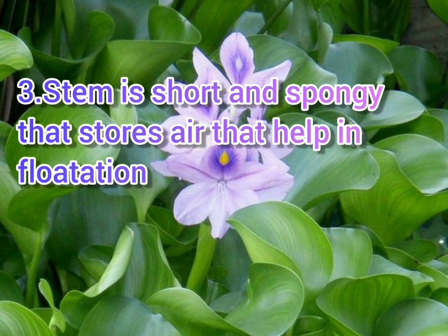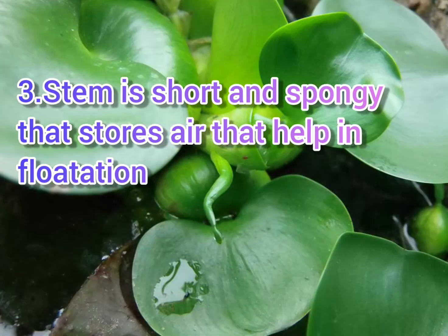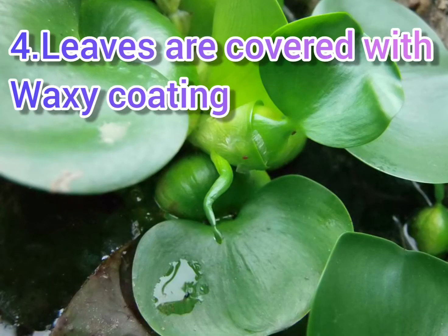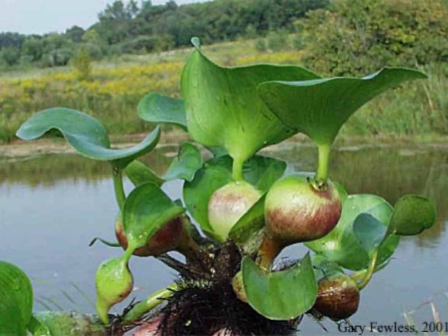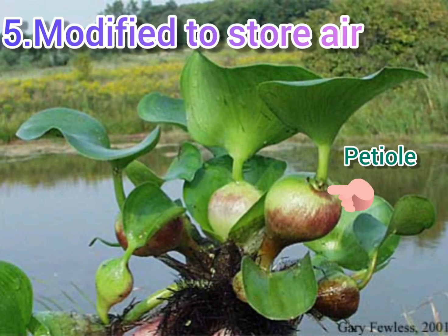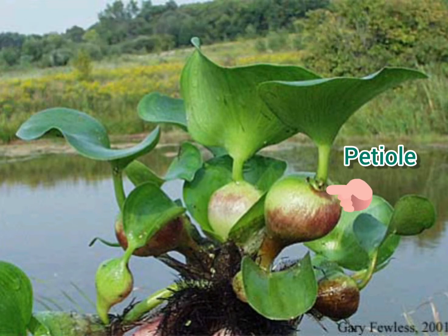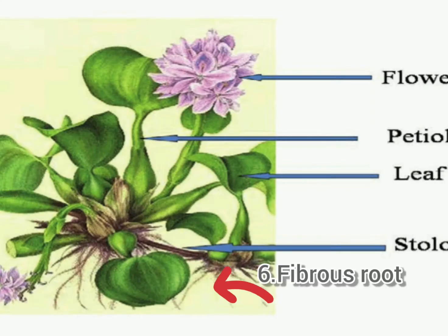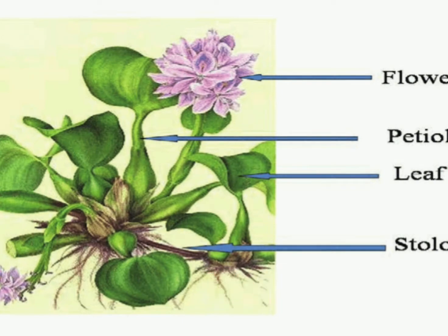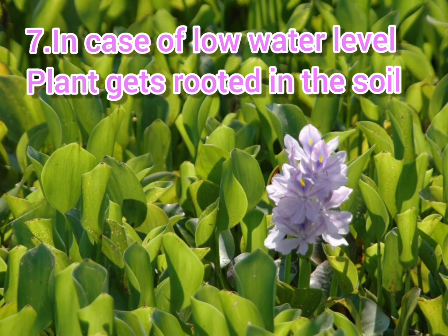The stem is spongy and stores air. The leaves are covered with a waterproof waxy coat to prevent wetting and desiccation. The petiole is modified to store air for floating in water and for gaseous exchange. The roots are fibrous type and poorly developed. In case of lowering water level, the plants get rooted in the soil.